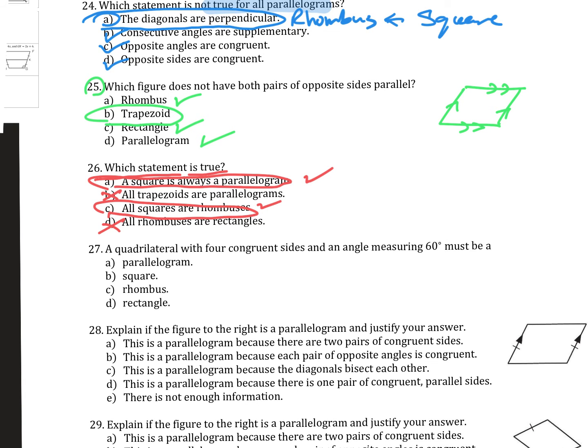Number 27. A quadrilateral with four congruent sides and an angle measuring 60 degrees. Well, that must be a rhombus. By the definition, it can't be a square because a square's angle measure is 90, so it has to be a rhombus.